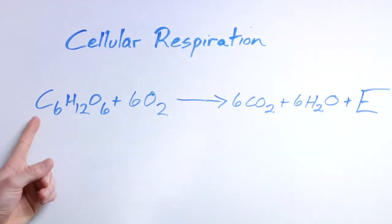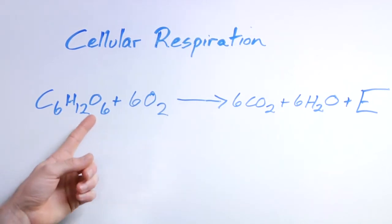For cellular respiration, you have to have glucose, which is C6H12O6. That's just carbon, hydrogen, and oxygen.